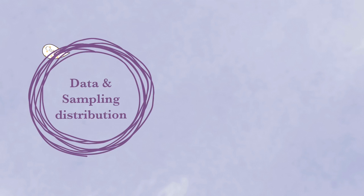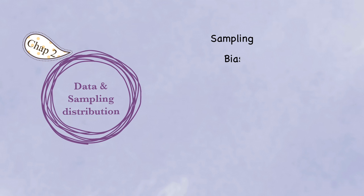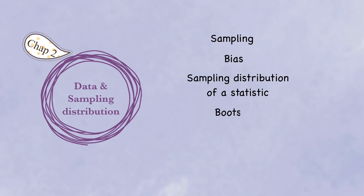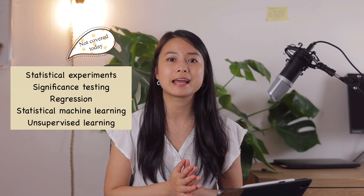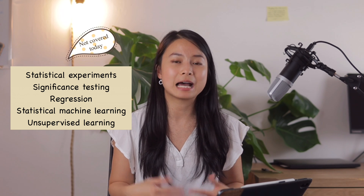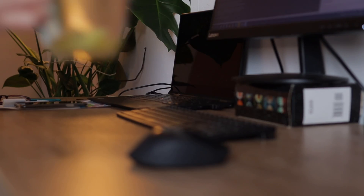We'll also look at data and sampling distributions, covering sampling bias, sampling distribution of a statistic, bootstrap, confidence intervals, and an overview of the main types of distributions. To avoid information overload, we are not covering more specialized topics such as statistical experiments, significance testing, regression, statistical machine learning, and unsupervised learning. I believe these topics may not be relevant unless you're doing machine learning or hypothesis testing, so I'll leave them for future videos.